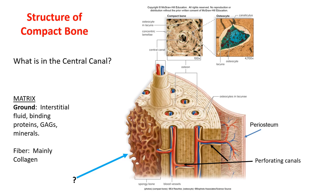GAGs — glycosaminoglycans — contain a sugar moiety, an amino group, and form a complex carbohydrate. They serve important signaling and nutritional roles. Then there are various minerals deposited in bone, including calcium and phosphorus.